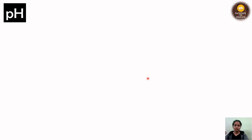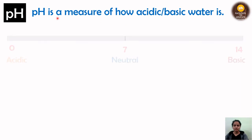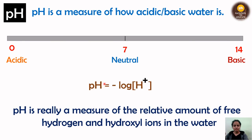pH is a measure of how acidic or basic water is. The pH scale ranges from 0 to 14. If pH is between 0 and 7, the water is acidic in nature; if it is between 7 and 14, it is basic in nature; and if it is exactly 7, it is neutral — the pH of distilled or pure water is 7.